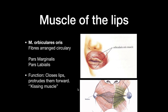The next muscle group is the muscles of the lips: musculus orbicularis oris — not to be confused with orbicularis oculi of the eye. It consists of fibers arranged circularly as origin and insertion. This muscle has two parts: pars marginalis and pars labialis. The function is that it closes the lips and protrudes them forward, like when you're kissing — that's why it's called the kissing muscle.